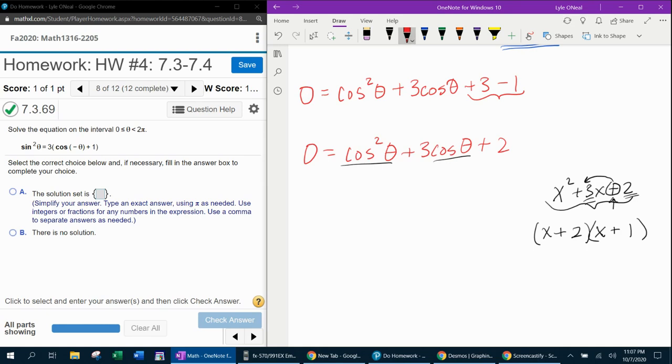And now all I have to do is replace each x with cosine theta to get my factored form. So this equation is going to become cosine theta plus two times cosine theta plus one.